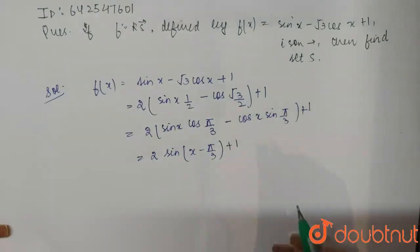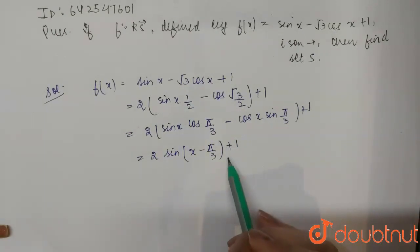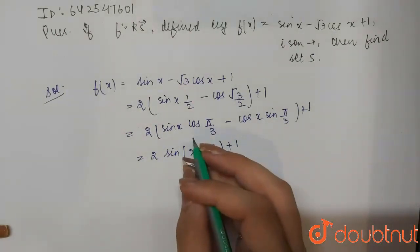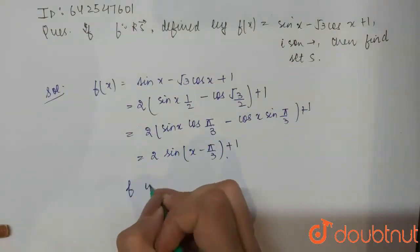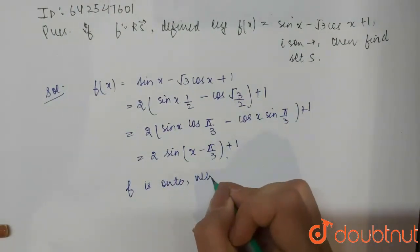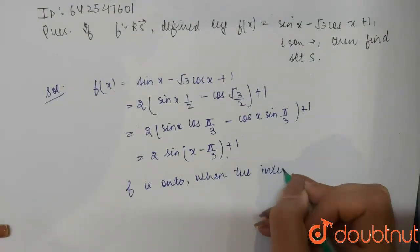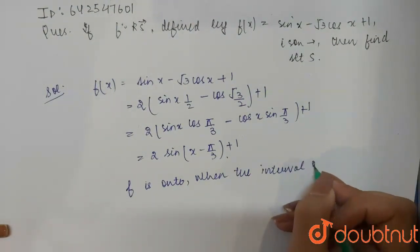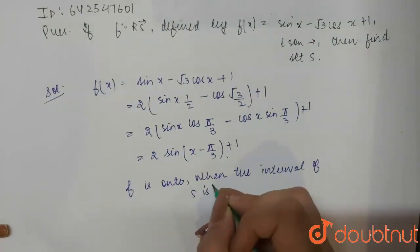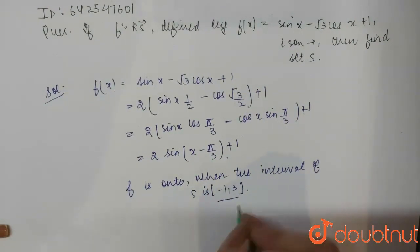So now we can say that clearly f is on 2 when the interval of S is between minus 1 and 3. So this is the set.